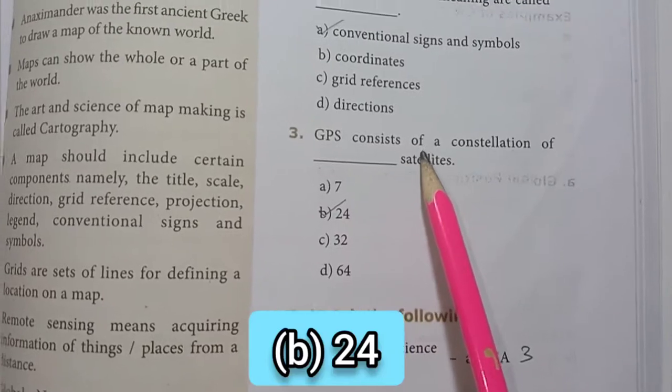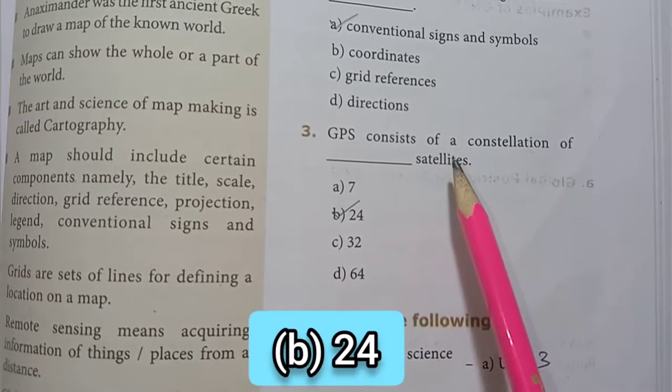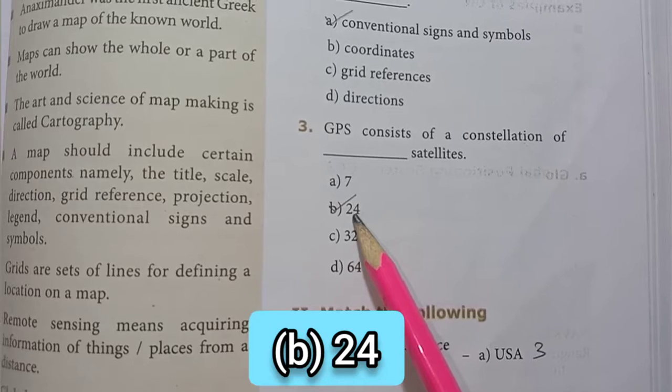Then third one, GPS consists of a constellation of dash satellites. B option, 24 satellites.